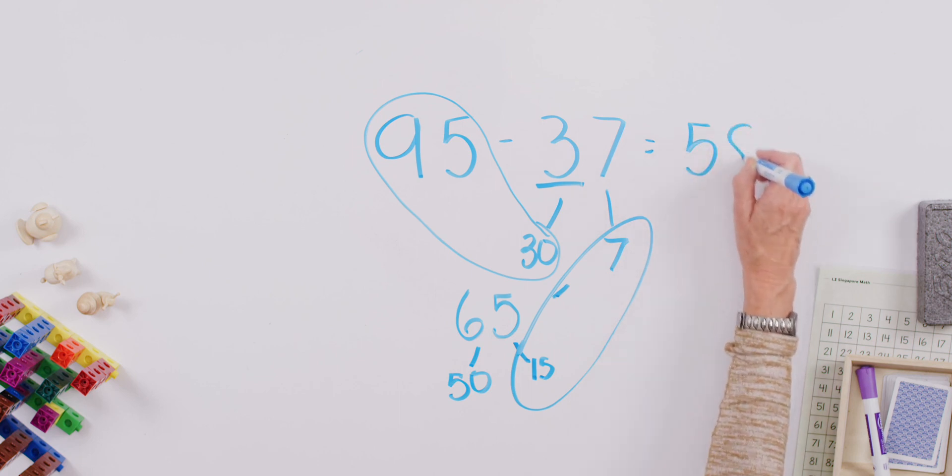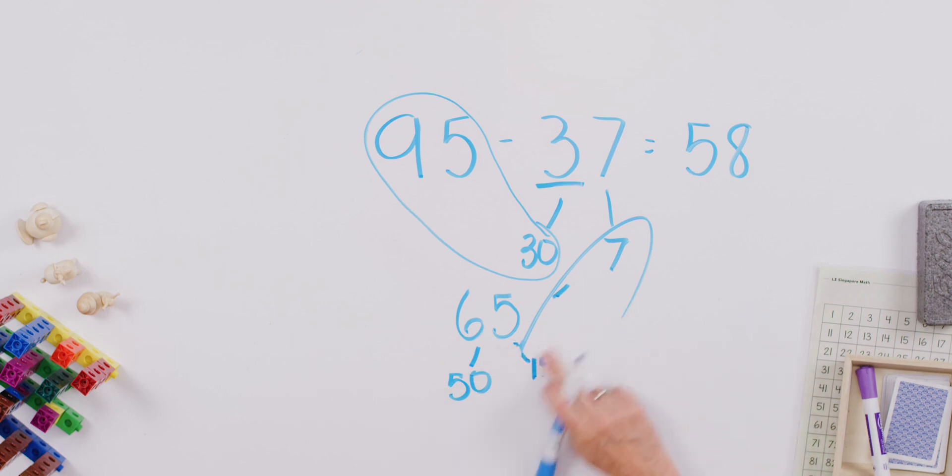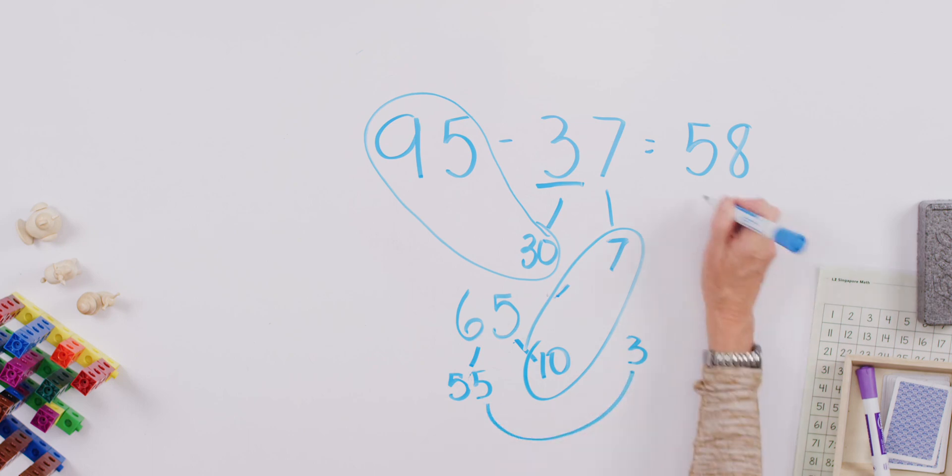If you don't know 15 minus 7, you can think of it as, let's pull 10 out because that's easiest for us to think about. But then that means on this side we have 55. Then again, 10 minus 7 gives us 3. Putting that together with our 55 gives us our final answer of 58.